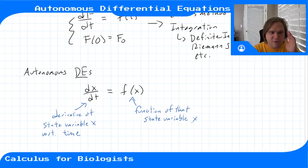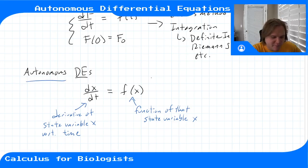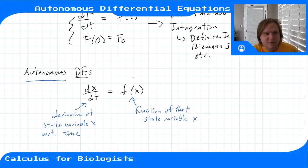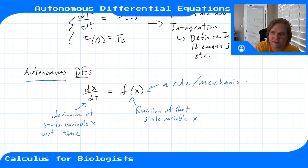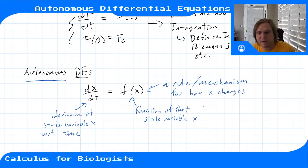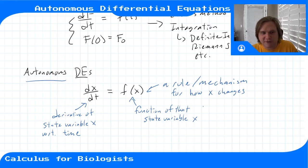These are more similar to the discrete time dynamical systems we saw before. Rather than saying we measured this function and saw how the rate was as a function of time and integrated it, here we're saying we have a rule or a mechanism for how we think this quantity x changes over time. We know, or think we know, some sort of mechanism or rule that this variable follows, and we'll use that to generate the dynamics of the system.